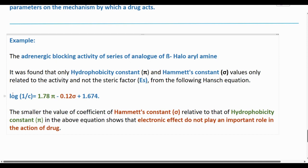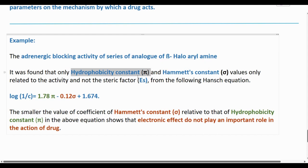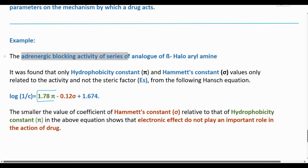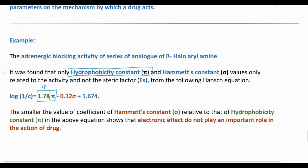In this example analysis, you can derive values using the pi value - the hydrophobic constant with a pi value. You can add the intrinsic blocking activity using the pi value, followed by Hammett's constant sigma: 0.12 sigma. These contribute to the activity.